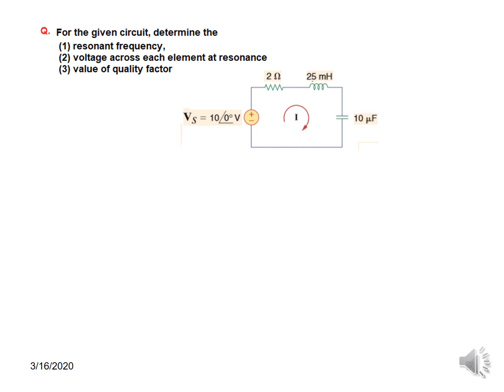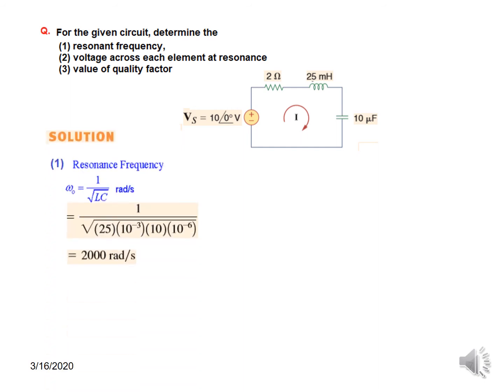Let's do an example. This circuit has R, L, and C given. We have to find the resonant frequency, voltage across each element, and the quality factor. We know ω₀ = 1/√(LC). Plugging in L = 25 mH and C = 10 μF, we get ω₀ = 2000 rad/s. To find voltages, we first find the current: I = V/R = 10/2 = 5 A.